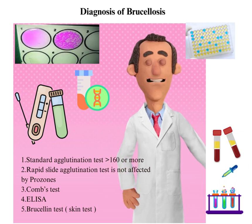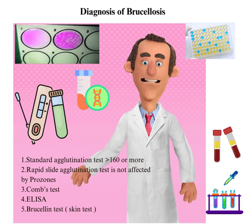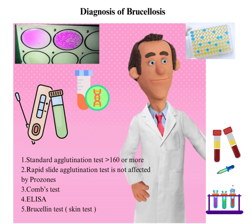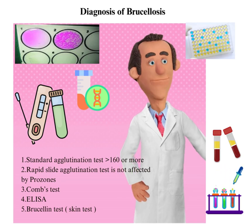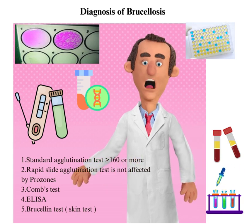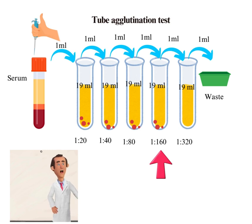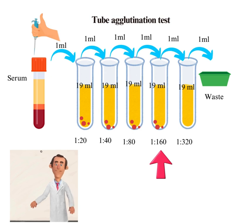Serologic tests include: the standard agglutination test with a titer of 1:160 or more considered positive; the rapid slide agglutination test, which is not affected by prozone; and ELISA (enzyme-linked immunosorbent assay). The brucellin test is a skin test based on delayed-type hypersensitivity. Agglutinins appear during the acute phase and continue to rise. In the tube agglutination test, serial dilutions of patient serum are done, equal volume of brucella antigen is added, and tubes are examined after incubation at 37°C. The titer is determined by the highest dilution showing visible agglutination.